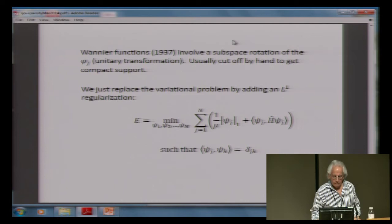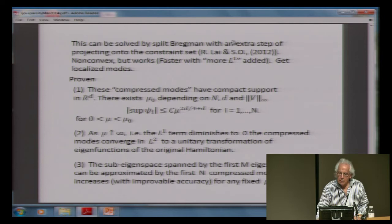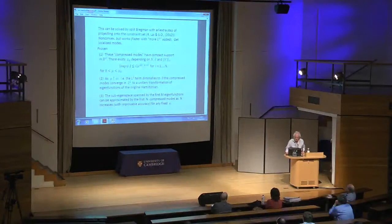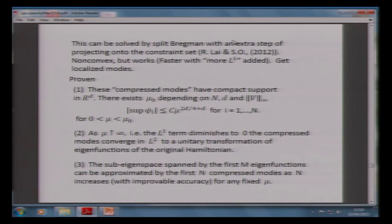To get eigenfunctions of the Schrödinger operator as approximations with compact support, all you've got to do is take 1/constant times the sum of L1 norms and use a nine-line code to do it. The constraint is that c_j inner product c_k equals delta_{jk} — orthonormality. This can be solved with split-Bregman. The only difference between L2 optimization and L1 optimization is something called the shrink operator, or soft thresholding: you minimize the absolute value of X plus a constant times X minus F squared. That's the only non-linear step in all these things, except for the projection onto eigenspace.